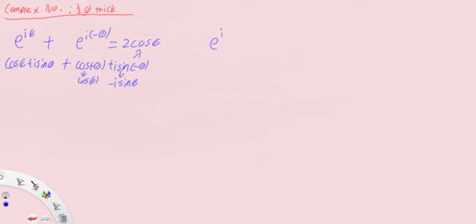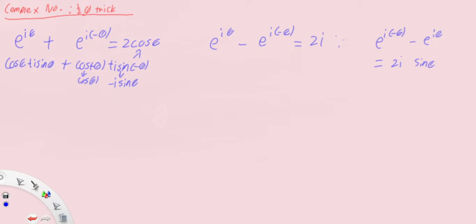The next property is proven the same way through polar form, but instead of adding these two complex numbers, we subtract them. e^(iθ) - e^(-iθ): cosθ minus cosθ gives zero, and i sinθ minus (-i sinθ) gives 2i sinθ. So e^(iθ) - e^(-iθ) = 2i sinθ. Likewise, e^(-iθ) - e^(iθ) also gives 2i sinθ. Let me get some space because I'm going to add a constant later on.